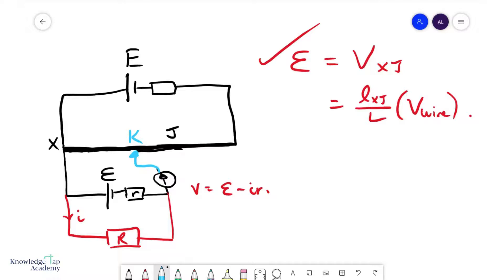How do we use this to figure out what the internal resistance is? Well, first, we can say that the potential difference across XK must be equal to the potential difference across this and also across this because they are all connected in parallel. So we find VXK first, which can be done using LXK over length of the wire times V wire.